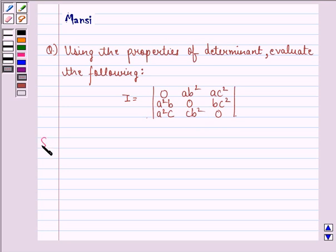Let us start with the solution to this question. We have the determinant I as 0, ab², ac², a²b, 0, bc², a²c, cb², 0.